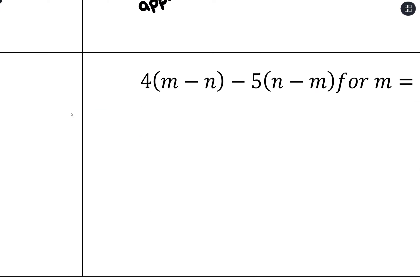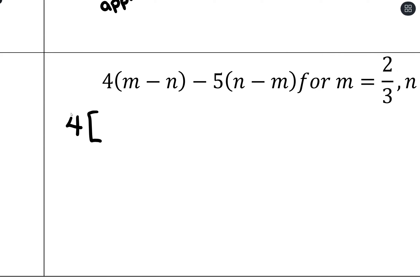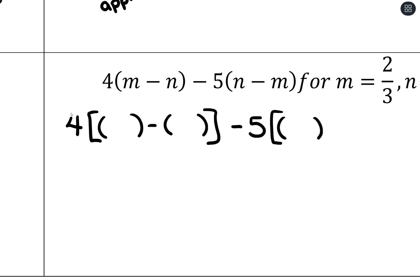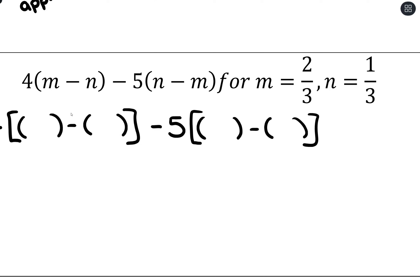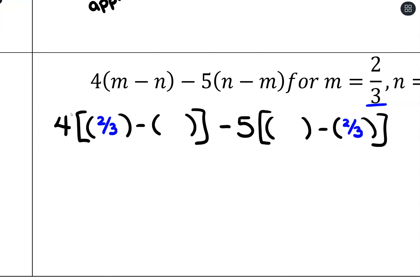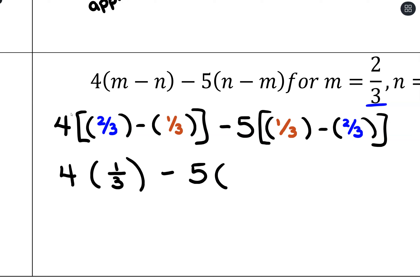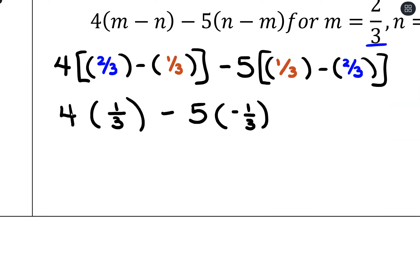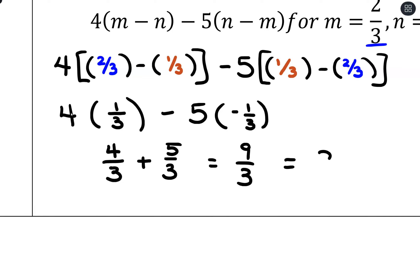Our last example: 4(m minus n) minus 5(n minus m), with m = two thirds and n = one third. Substituting: 4(2/3 minus 1/3) minus 5(1/3 minus 2/3). Simplifying the parentheses: two thirds minus one third is one third, and one third minus two thirds is negative one third. So we have 4 times one third minus 5 times negative one third, giving four thirds plus five thirds, which is nine thirds, which equals 3.